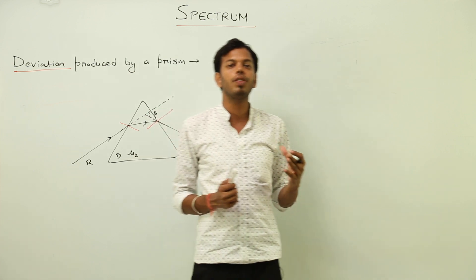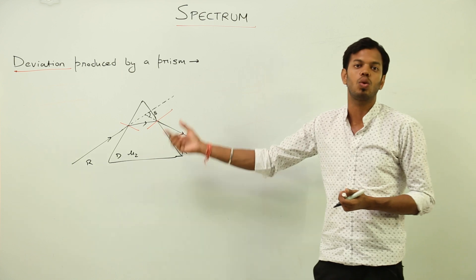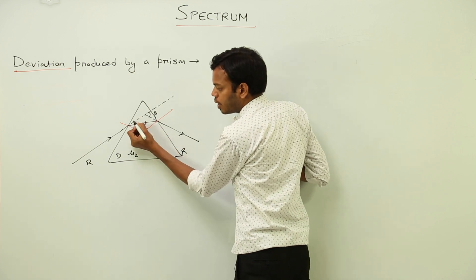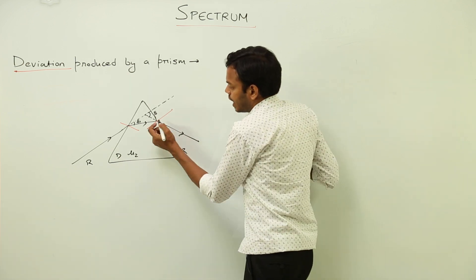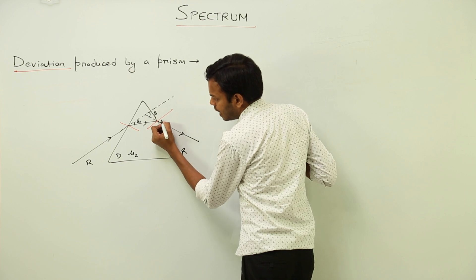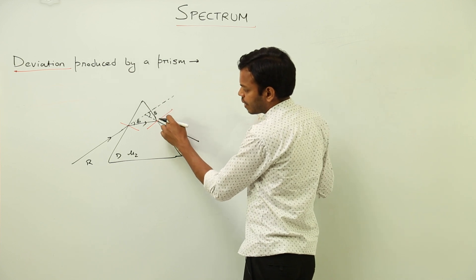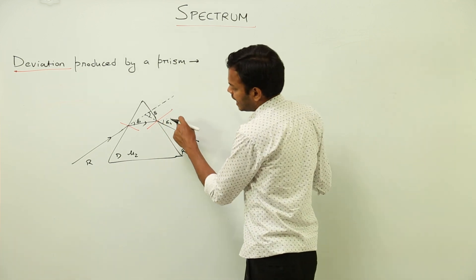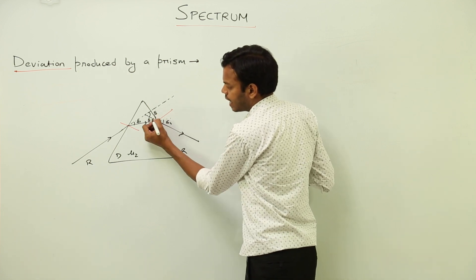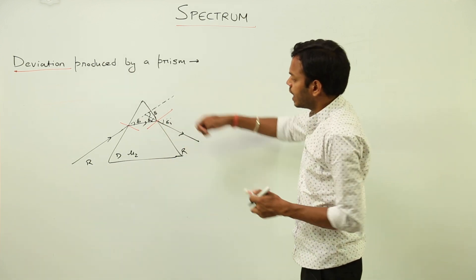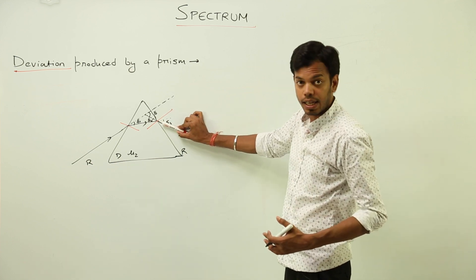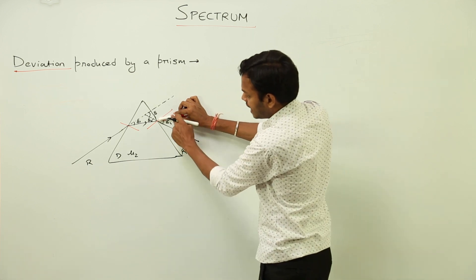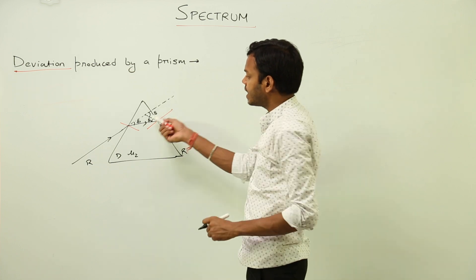The total deviation is actually the sum of the deviations from each surface. On the first surface, the ray was supposed to go straight but bent towards the normal — that angle of bending is δ1, the deviation produced by the first surface. On the second surface, the ray was supposed to go straight but bent by a certain angle — that is δ2, the deviation produced by the second surface. Using the vertically opposite angle of that line, we can identify δ2 in the triangle.